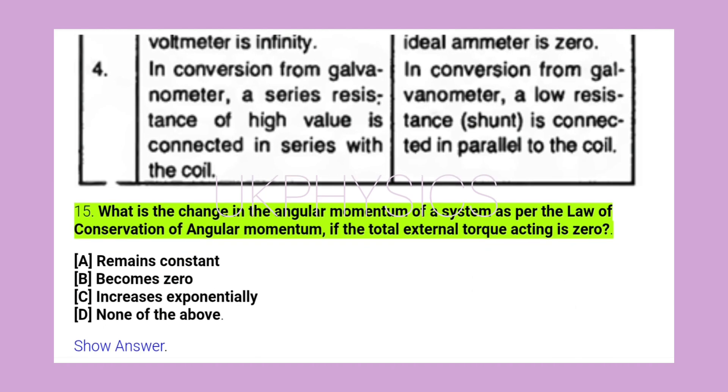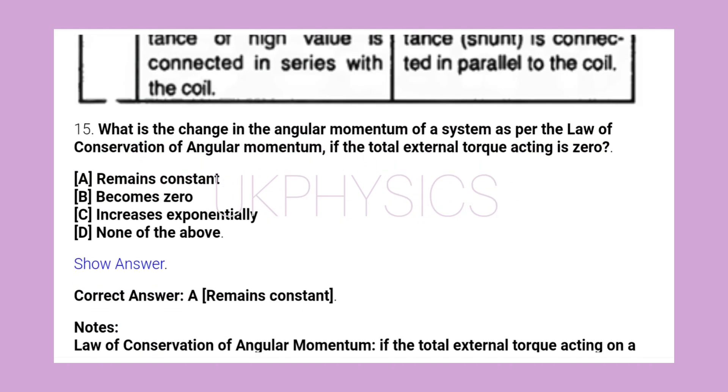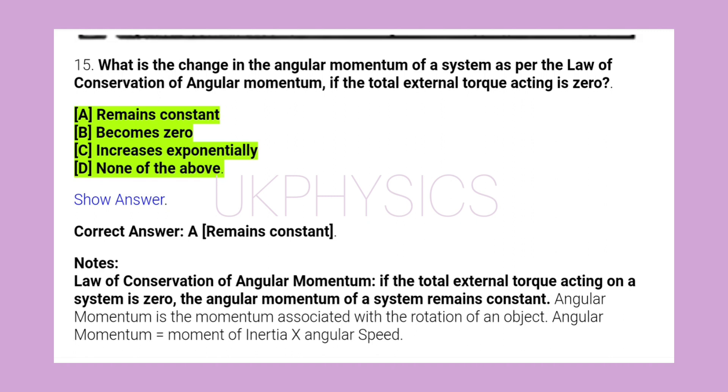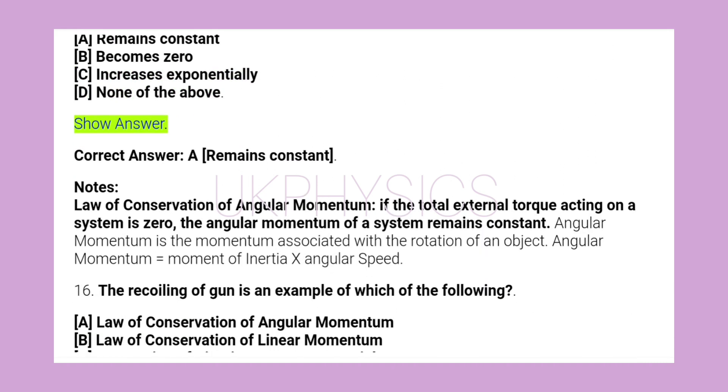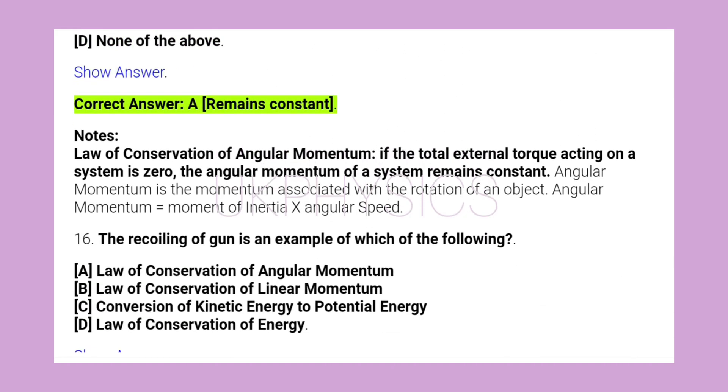15. What is the change in the angular momentum of a system as per the law of conservation of angular momentum if the total external torque acting is 0? A. Remains constant, B. Becomes 0, C. Increases exponentially, D. None of the above. Correct answer A. Remains constant.